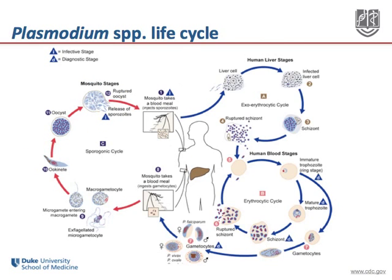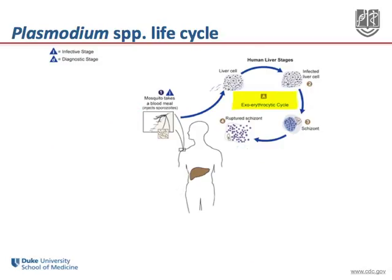Plasmodium species all share a similar life cycle in both a vertebrate host and in a mosquito. In the diagram depicted here, a human host is located in the middle. To the left is the cycle in the mosquito, which is critically important to transmission, but which is not going to be the focus of this micro lecture. On the right are the two parasite stages present in humans. At the top right is the exoerythrocytic cycle, which takes place in hepatocytes.